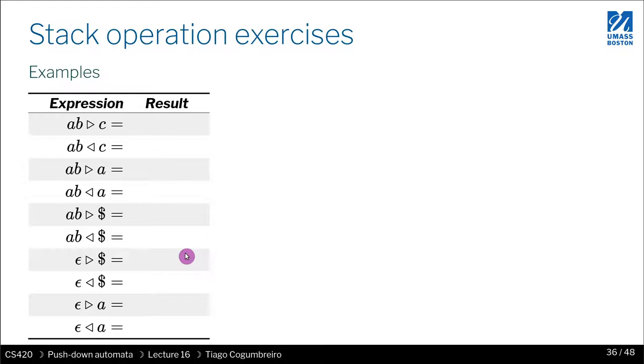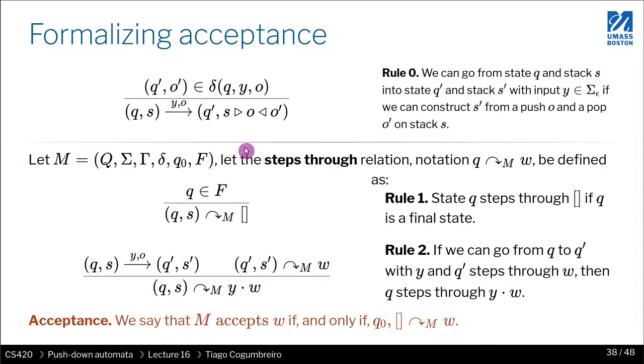So now I just give you a few examples. I invite you to pause the slides and try to do it yourself. So if you have AB, if you're popping C, you get undefined. If you're pushing C, you get CAB. If you pop A, you get just B. If you push A, you get AAB. If you pop dollar sign, it's not there, so you get undefined. If you push dollar sign, again, this is incorrect, dollar sign should be here. If you have empty and you pop, you get undefined. If you push it, you just get the dollar sign. So you know how a stack works. This is basically specifying that.